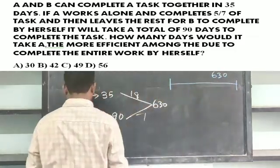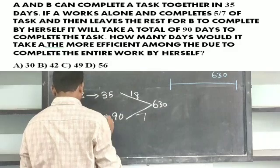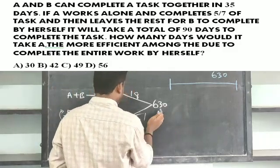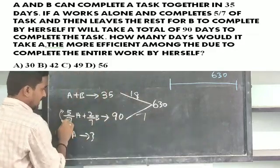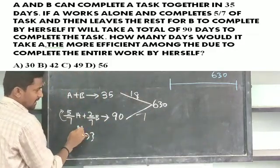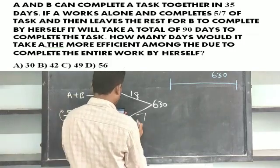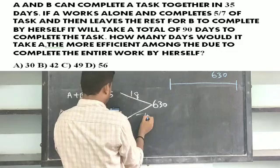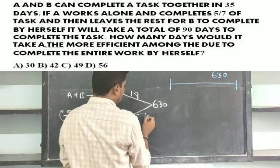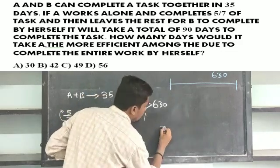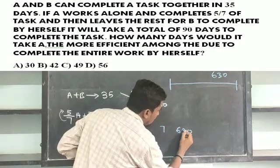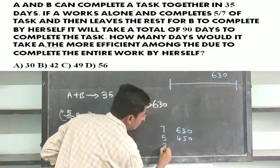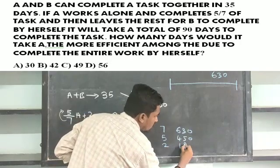What is the total? 7 parts is 680, 5 parts is 450, and 2 parts is 450.